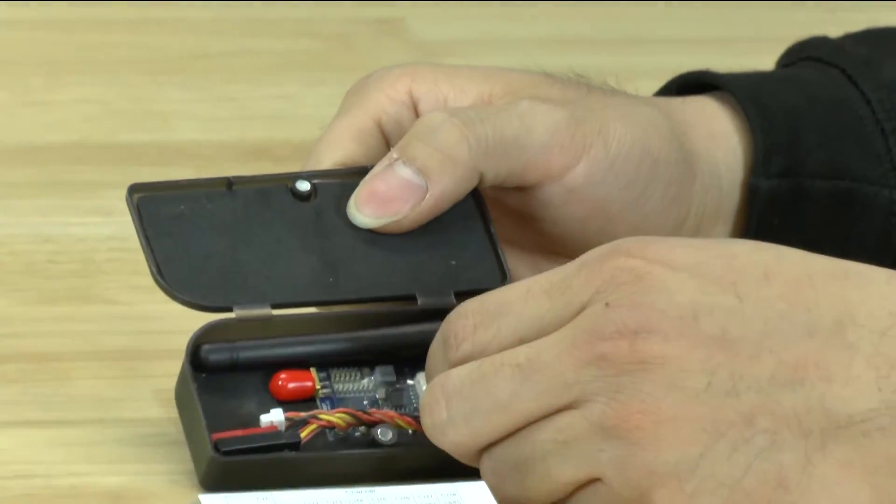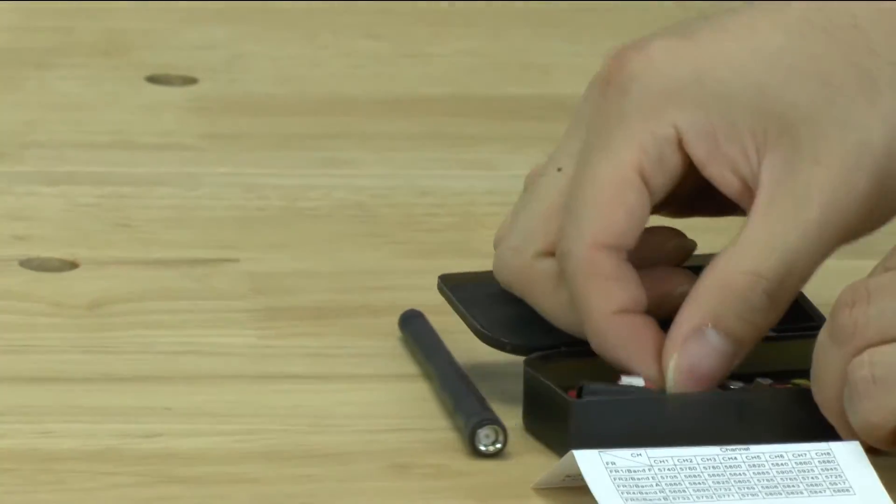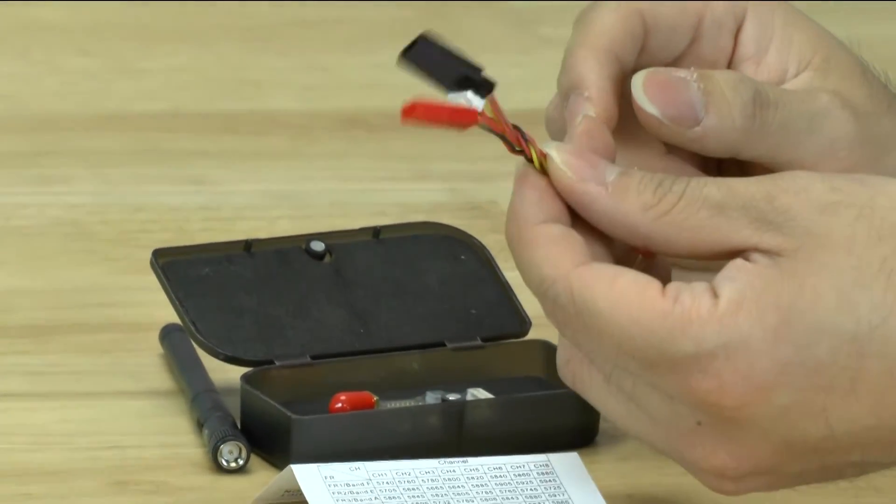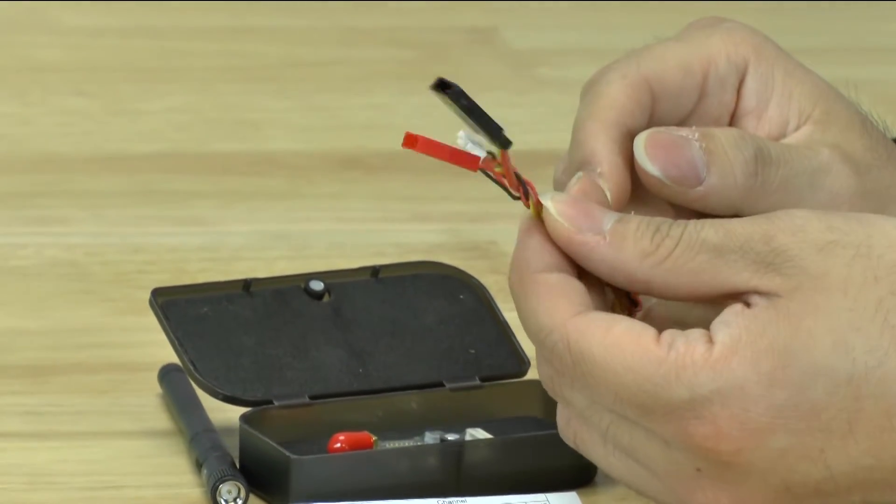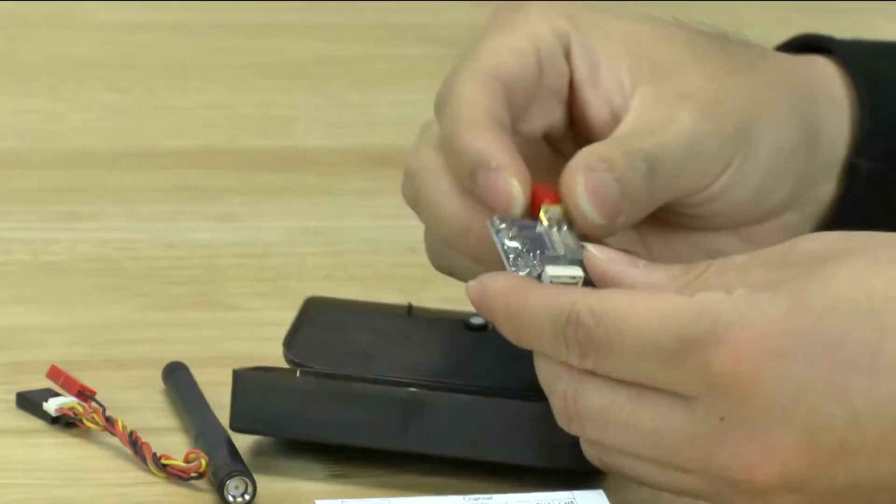So in here you get your standard whip antenna which nobody really uses, the cable which everybody's kind of used to. A very nice cable and it's very easy to get replacements for these cables. And then the VTX itself.